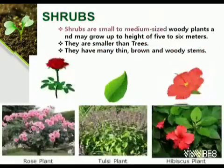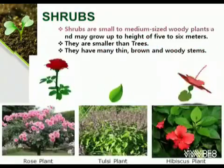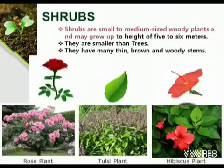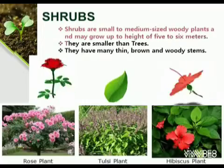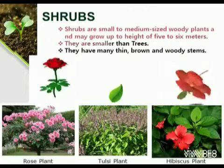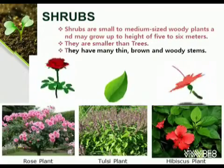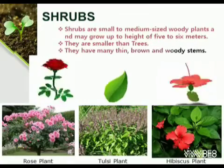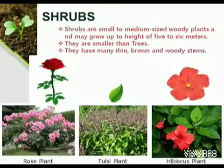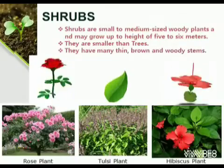Shrubs. Some plants are small and have woody stems. Such plants are called shrubs. Examples are rose plant, tulsi plant and hibiscus plant.